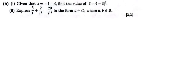Let's go to question 2B1. Given that Z equals negative 1 plus i, find the value of Z conjugate. When we put Z bar, it's basically the same as Z conjugate. So Z bar is negative 1 minus i, because we need to change the sign where there is i.